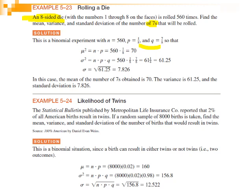Using the formulas: μ = N × P = 560 × 1/8 = 70. The variance σ² = N × P × Q = 560 × 1/8 × 7/8 = 61.25. Finally, the standard deviation σ = √61.25 ≈ 7.826.